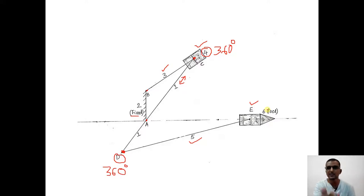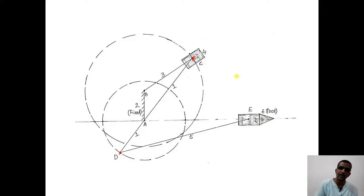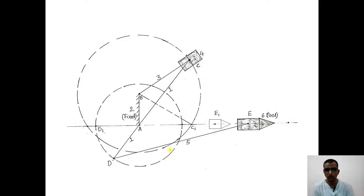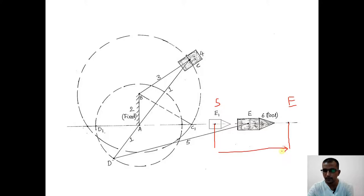Now we will see how this configuration generates a quick return motion. Both point D and the slider at point C can complete 360-degree rotation. The path traced by point C is a circle, and the path traced by point D is also a circle. The tool is currently at point E, but I want it to move to one of the extreme positions. I will consider one extreme as the start position and the other as the end position — the distance between them is the stroke.